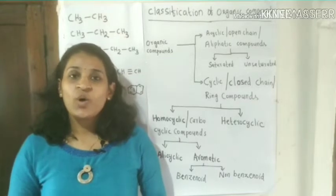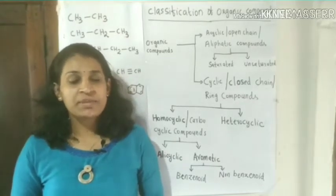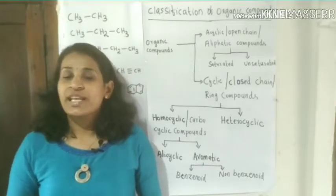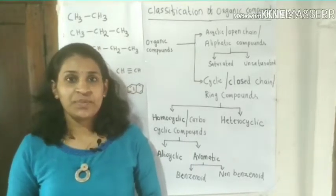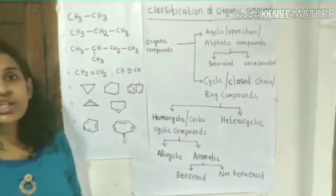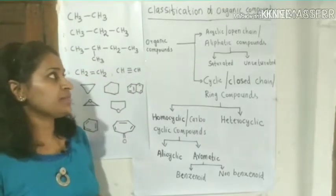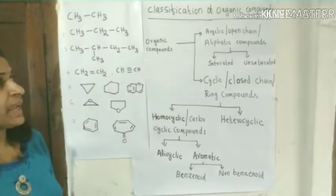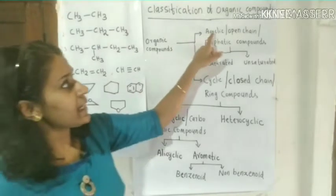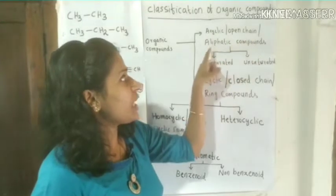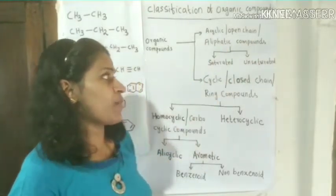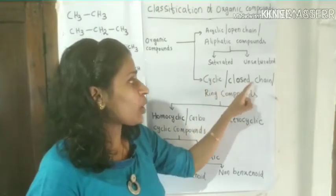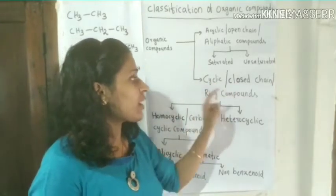Welcome to Chemtube. Organic chemistry, some basic principles and techniques, part 2. In the naming of organic compounds: classification. Organic compounds are mainly classified into two types: acyclic, or open chain, or aliphatic compounds; and cyclic, or closed chain, or ring compounds.